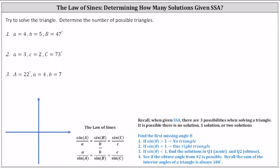To do this, we'll find the first missing angle. If the sine function value is greater than one, there's no possible triangle. If the sine function value is equal to one, we have one right triangle. If the sine function value is less than one, we'll find the first angle in quadrant one, as well as the obtuse angle in quadrant two, and then check to see if the obtuse angle gives us a second possible triangle.